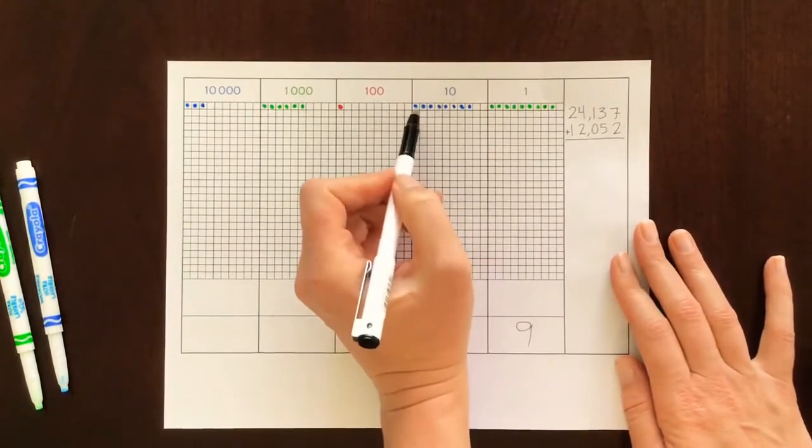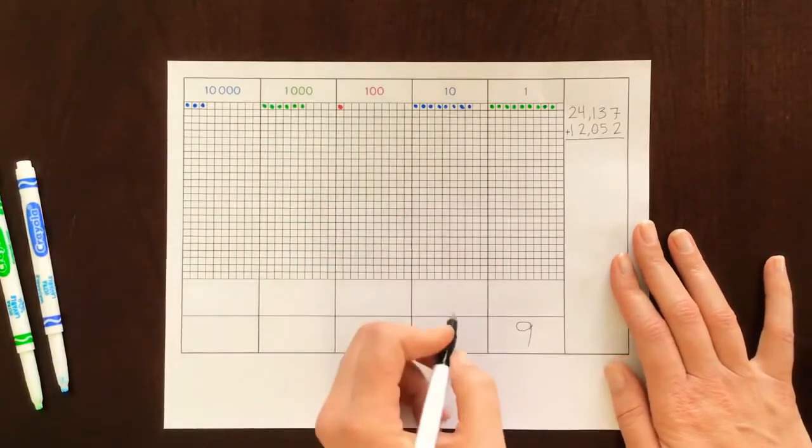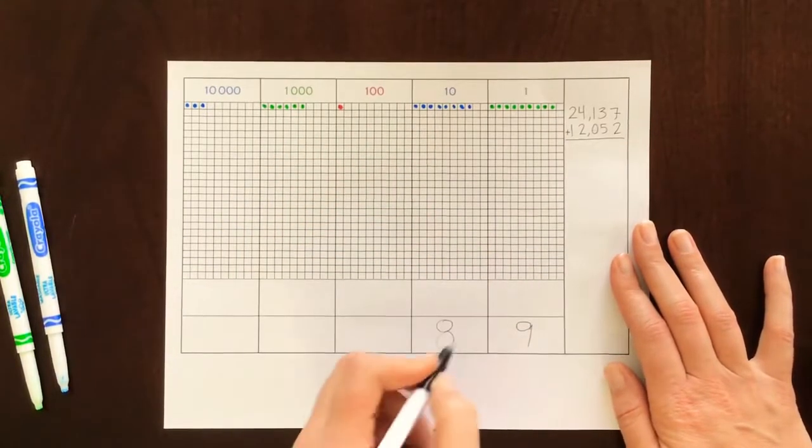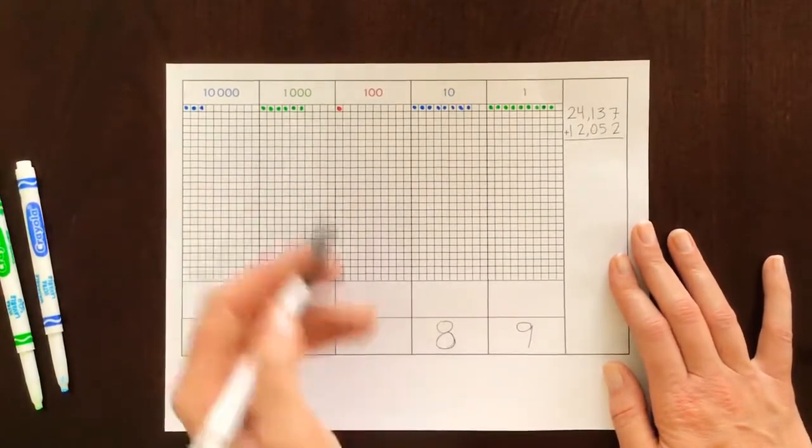Alright. Tens place one, two, three, four, five, six, seven, eight. I'm writing in the black pen so it shows up. One hundred.